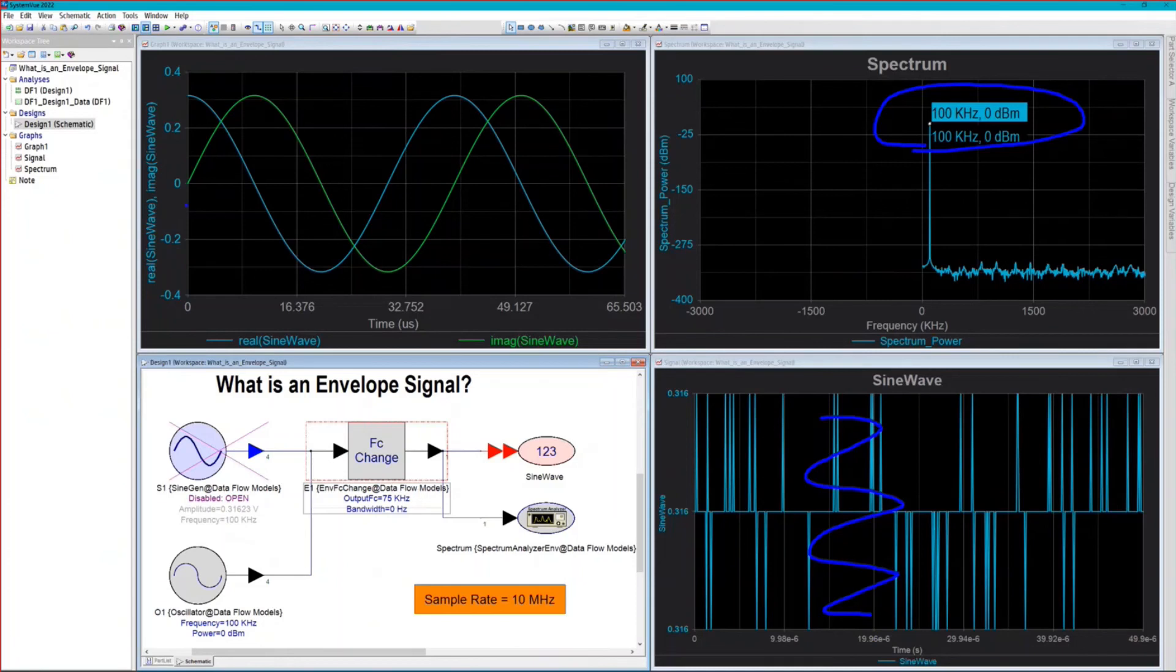However, up here in the upper left, it's interesting that we got both real and imaginary parts of the signal as though we were still looking at a complex envelope signal. So that's one use of the FC change part, as well as the difference between a baseband source and an envelope source in SystemVue.